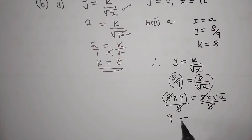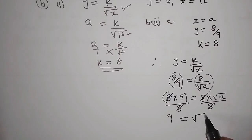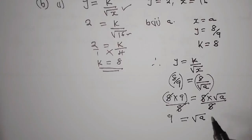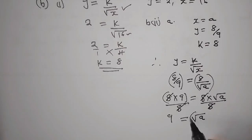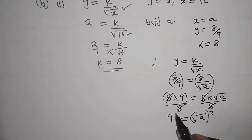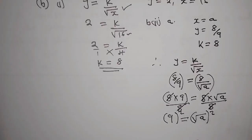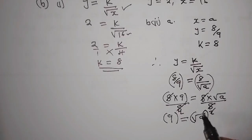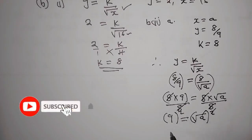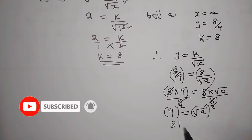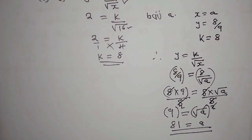9 is equal to the root of a. So now we have to remove the square root by squaring both sides. So this and the square root cancel. So 9 squared is just 81 equals to a. So that is the answer.